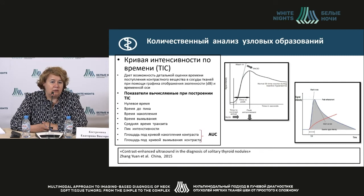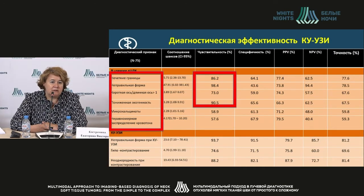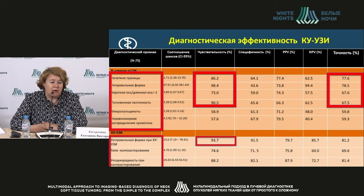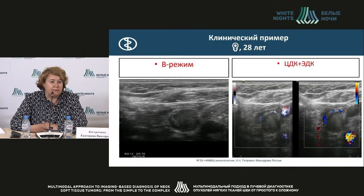We can assess contrast arrival qualitatively when it is accumulating, calculating the peak and area under the curve as accumulation of contrast. Regarding diagnostic efficacy, we see signs of malignancy with low sensitivity at B-mode and CDI versus contrast enhancement. Irregular form and heterogeneity improve specificity and precision of the method.